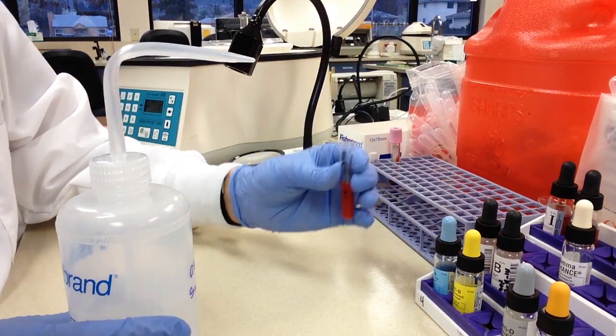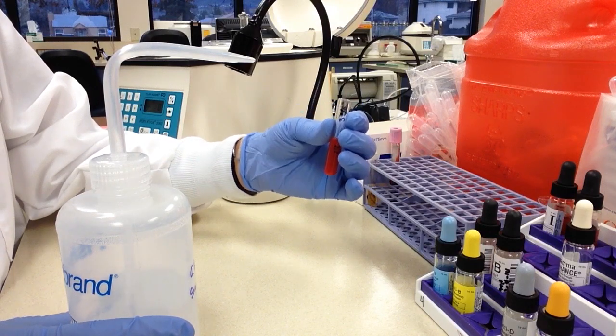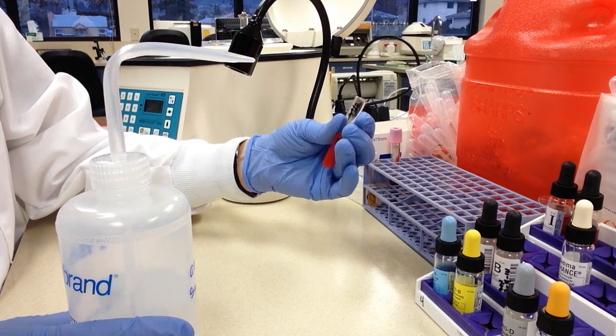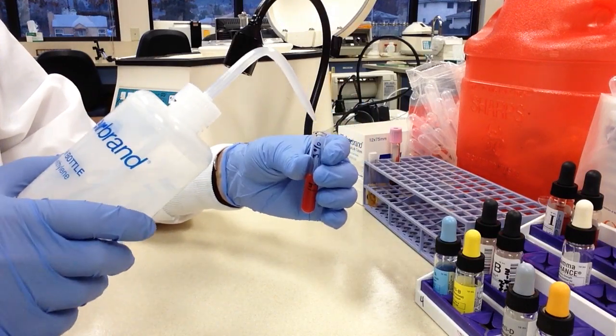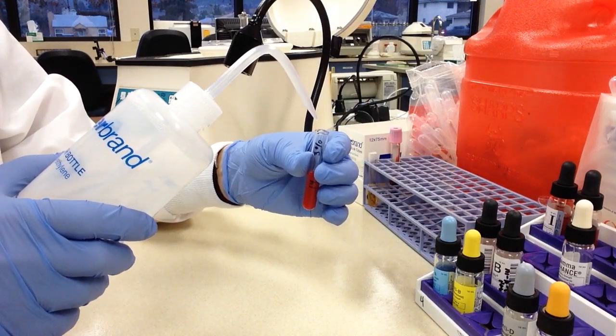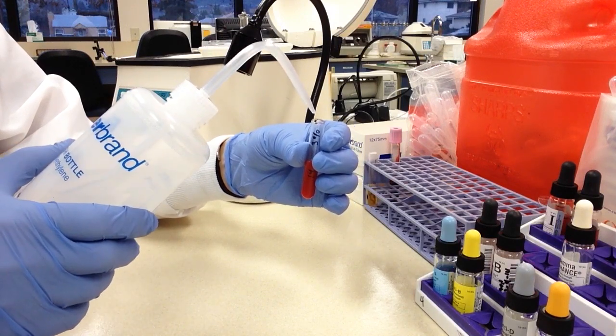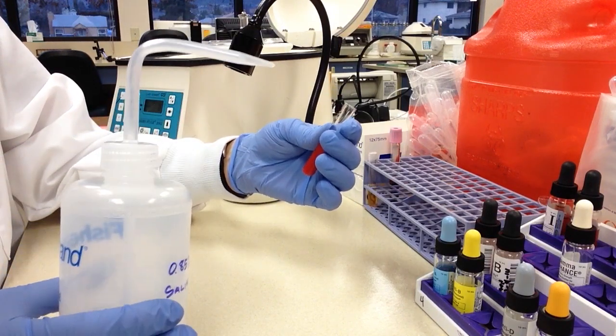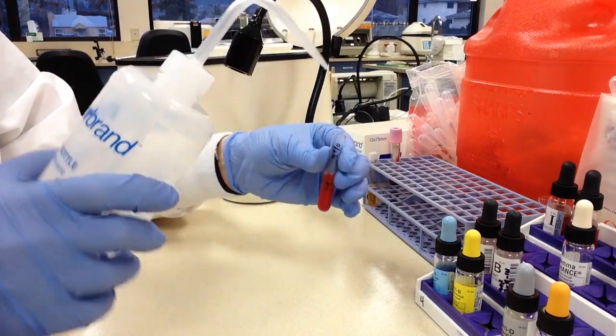Now, one thing you have to be careful about when you're pipetting or you're putting things in these tubes is, especially if they have something else in it, you don't want to contaminate. So you can see that I'm being very careful about not putting the tip or touching the tip of this saline bottle to this tube because there's blood in there and I don't want to contaminate the saline tube.